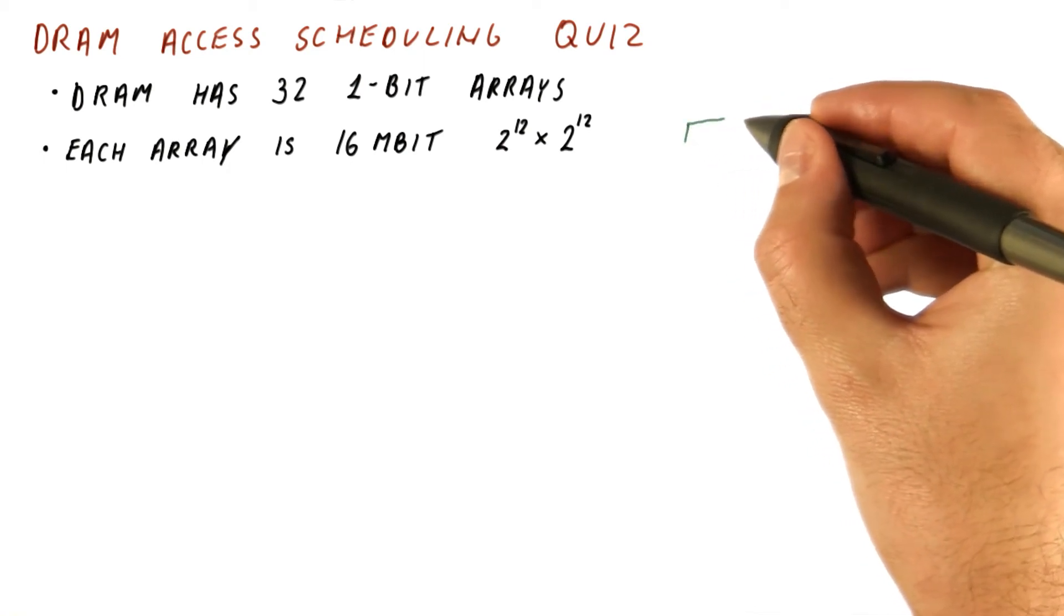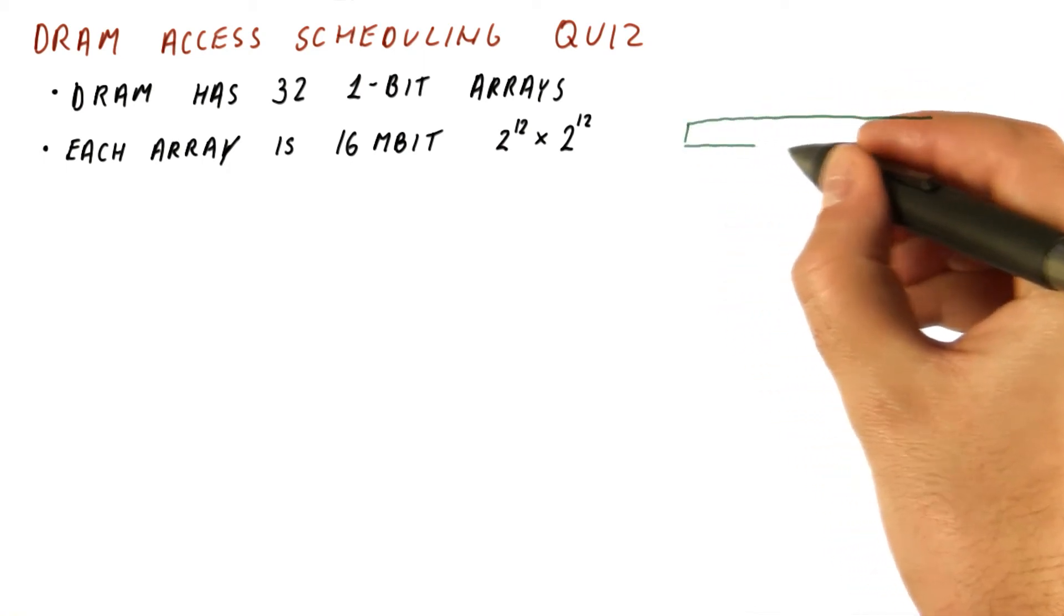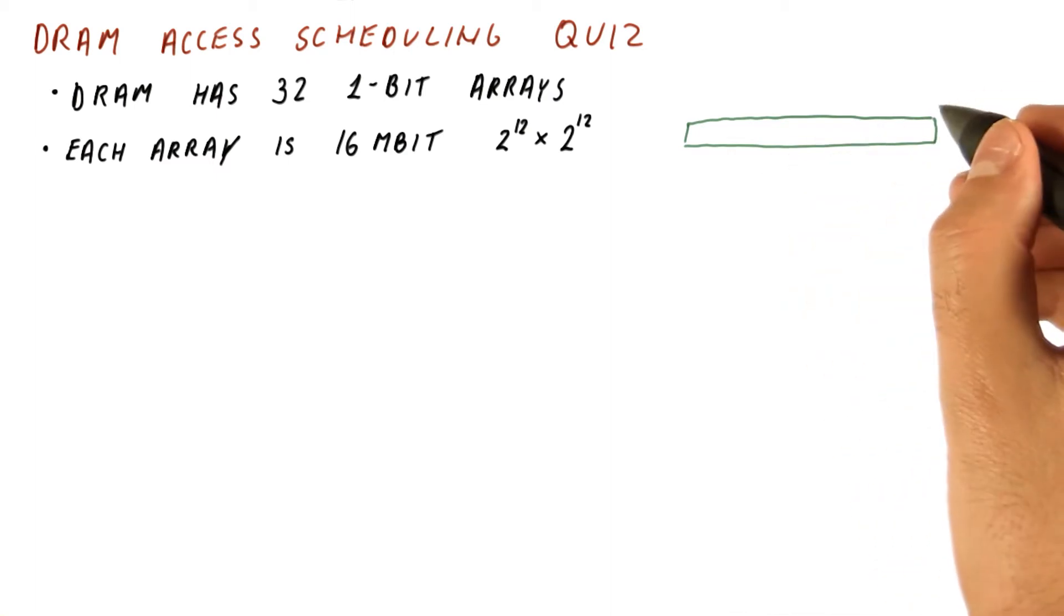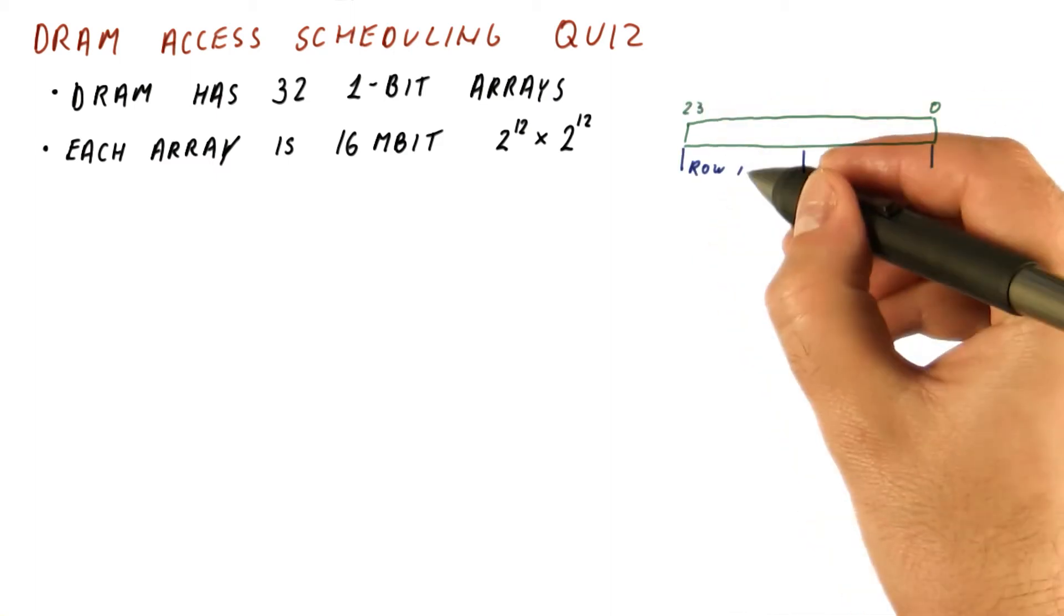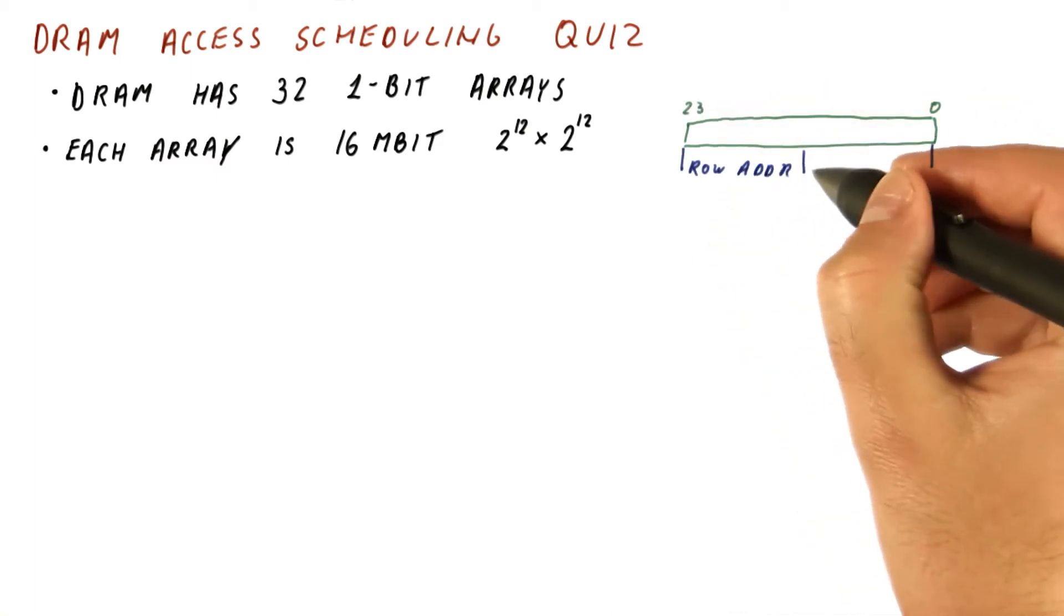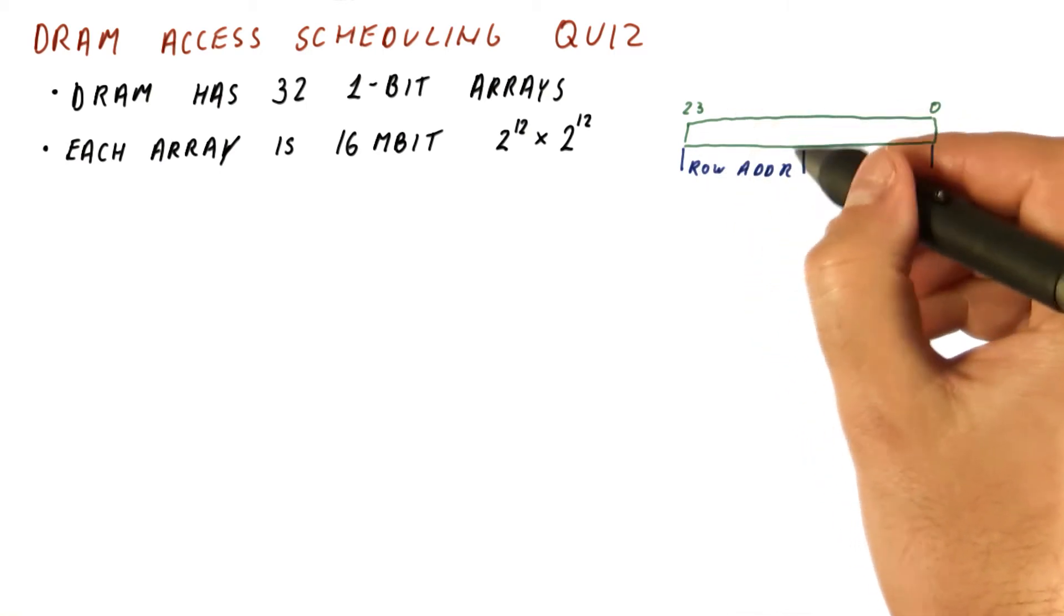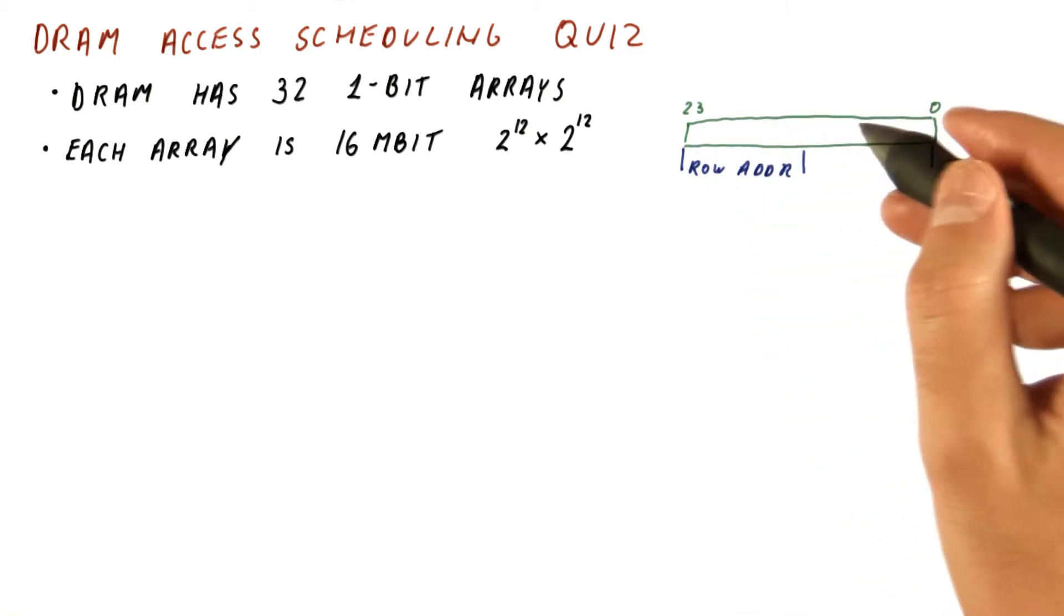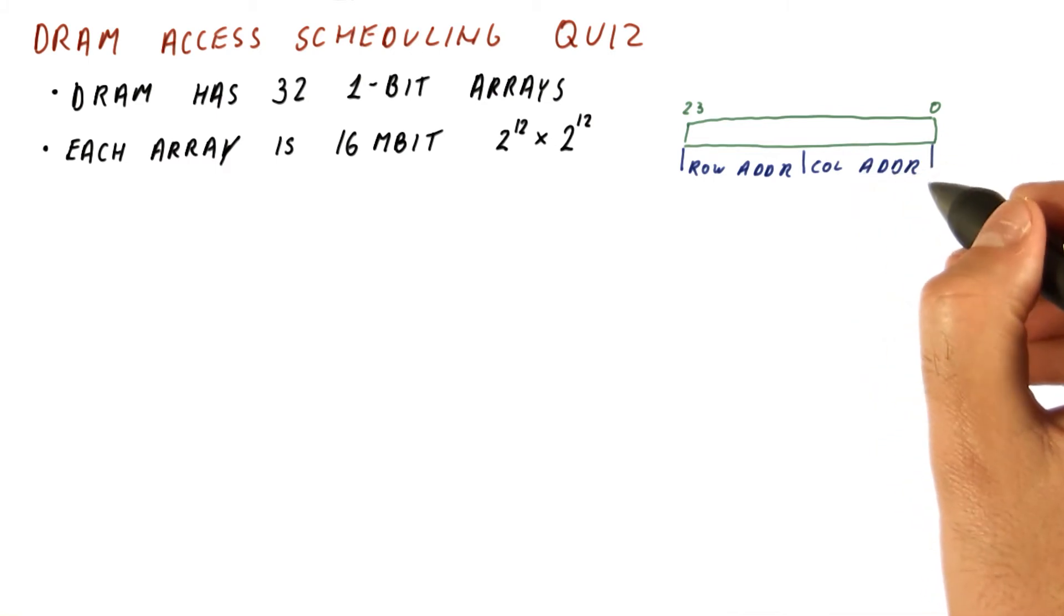And the 24-bit address that we feed to this memory, where bits are numbered 0 through 23, is thus divided by the DRAM into a 12-bit row address, which is the upper bits of the address, and the column address, which is the lower 12 bits of the address.